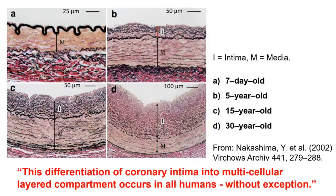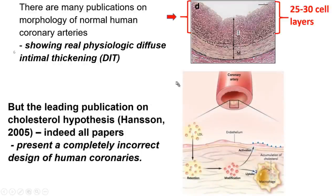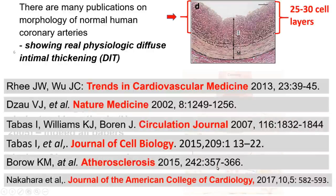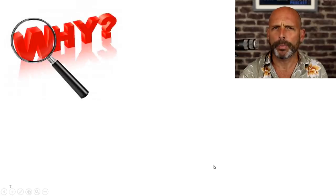The differentiation of coronary intima into a multicellular layered compartment occurs in all humans without exception. Many publications show physiologic diffuse intimal thickening (DIT) — it's normal. But the leading publication on the cholesterol hypothesis, Hansen 2005, and practically all papers, present a completely incorrect design — they generally show a thin, mostly empty intima. This makes it appear that LDL particles could just get in there. Nearly all big publications on the cholesterol theory show this incorrect view.